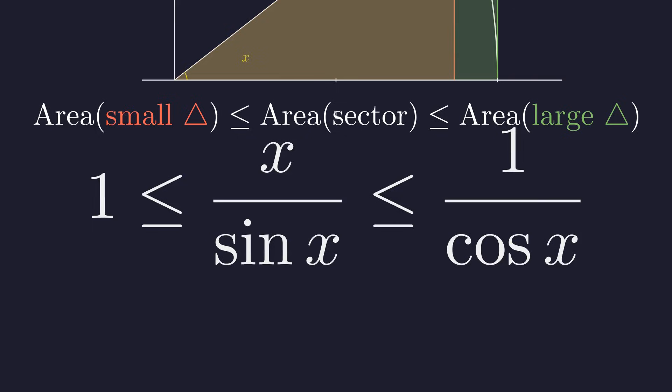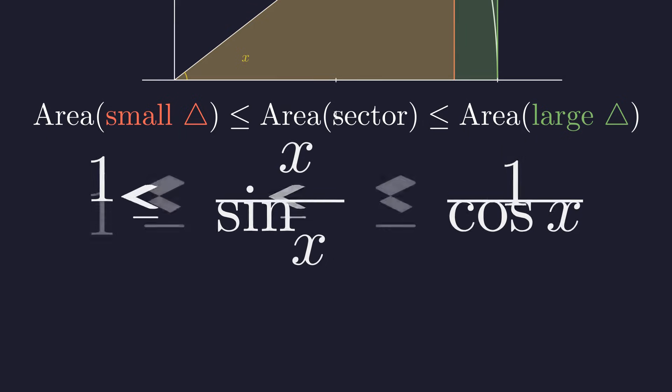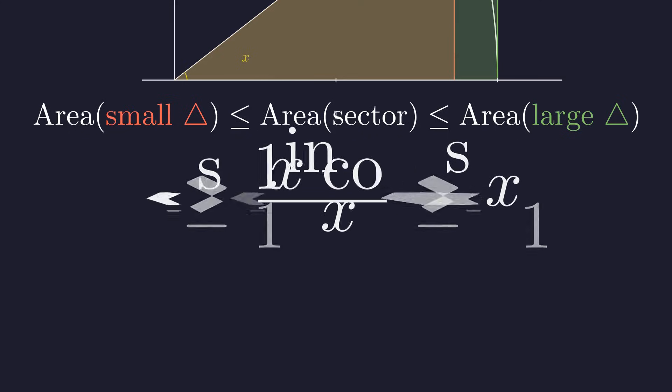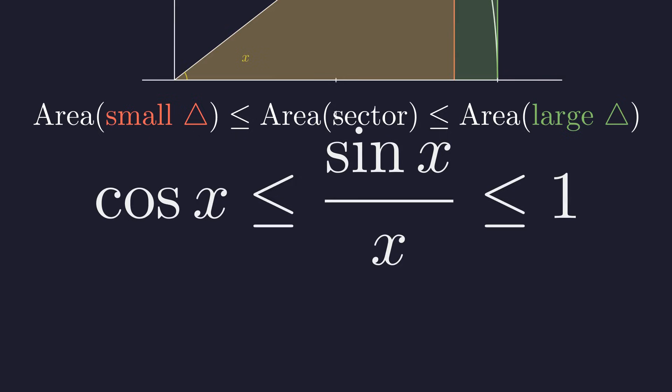We're almost there. We have x over sine x, but we want sine x over x. To get this, we take the reciprocal of all three parts. This action reverses the direction of both inequality signs. Rewriting this in the standard order, we have successfully squeezed our expression between cosine of x and one.